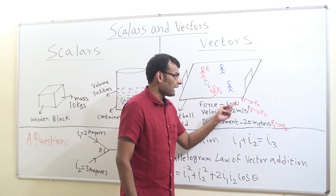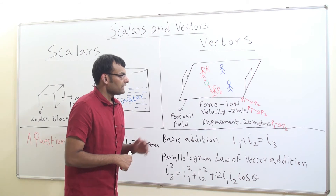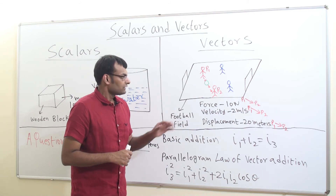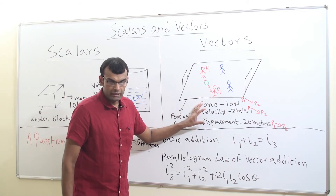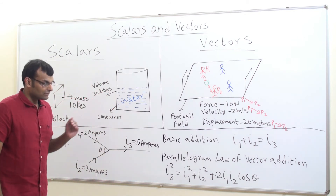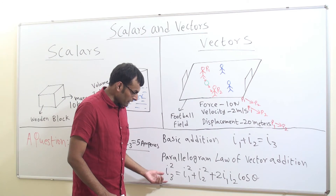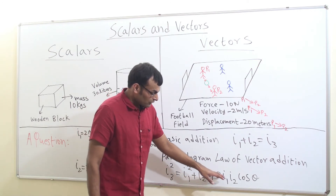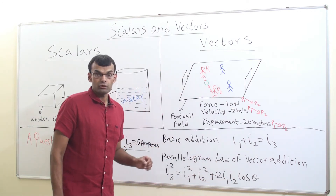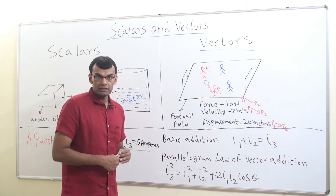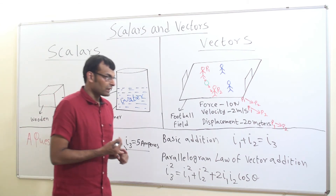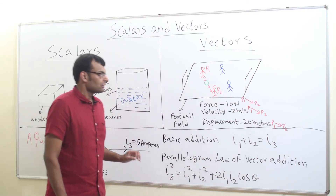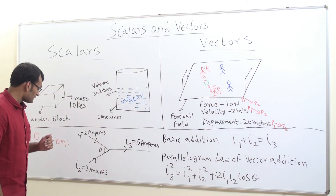Is having magnitude and direction sufficient to call something a vector? No — there is one more condition that must be satisfied: the quantity must obey the parallelogram law of vector addition. The formula is given by: R² = A² + B² + 2AB·cosθ. This formula for the parallelogram law of vector addition will be described in coming videos. So the three conditions are: magnitude, direction, and satisfying this equation.